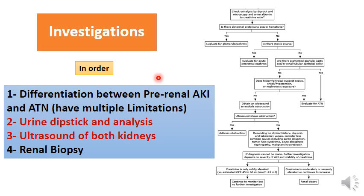Step three is targeted investigations. Any patient should start with urine analysis — called the mirror of the kidney — because urine is the product of the kidney and passes through all the urinary tract. Any injured structure will be reflected in the urine in the form of cells, casts, or crystals. Urine analysis is the first priority in examination of a patient with AKI.